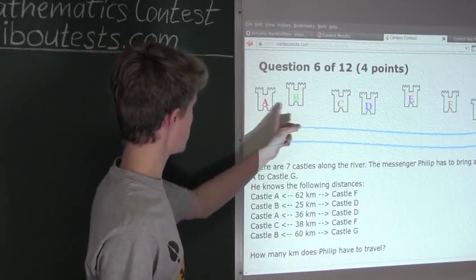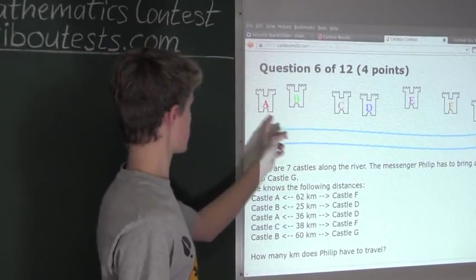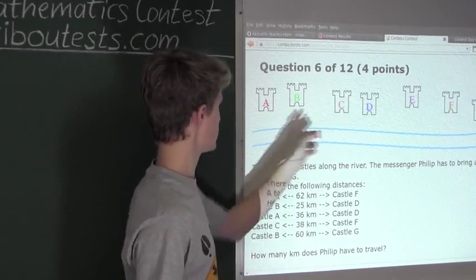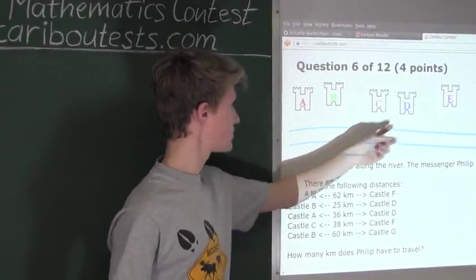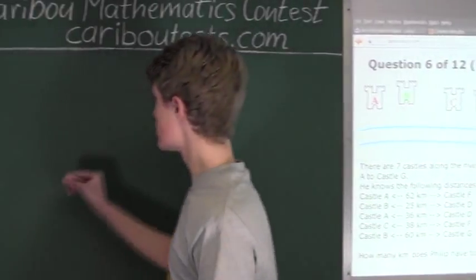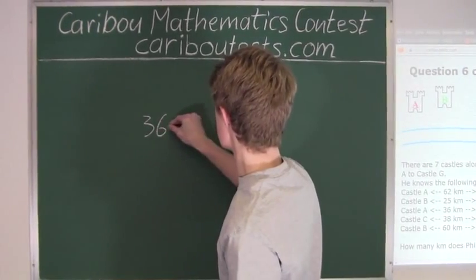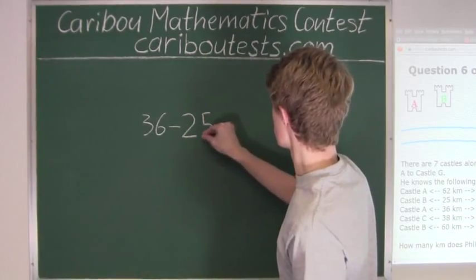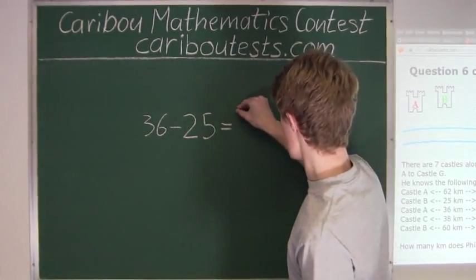So to find out A to B, we need to subtract B to D from A to D. And that is 36 minus 25. And that is equal to, well that is 11.